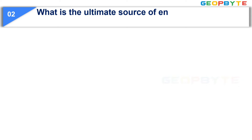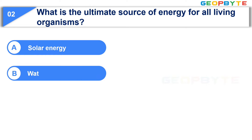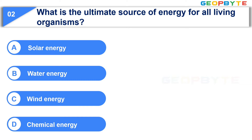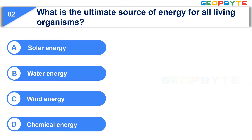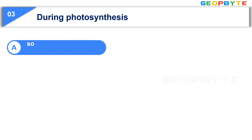Moving to the second question: What is the ultimate source of energy for all living organisms? Option A: Solar Energy. Option B: Water Energy. Option C: Wind Energy. Option D: Chemical Energy. Your time starts now. Your time is up and the correct answer is Option A: Solar Energy.